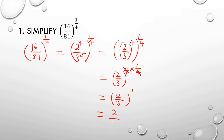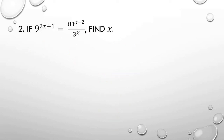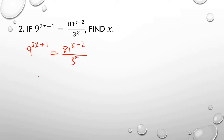That is the same as 2 over 3 exactly. Try it out and drop your questions if you have any. Next, we have to find the unknown variable x. We have 9 to the power 2x plus 1 being equal to 81 to the power x minus 2 over 3 to the power x. I'm going to reduce 9 to index form: 9 is 3 raised to power 2, so we still have 2x plus 1.